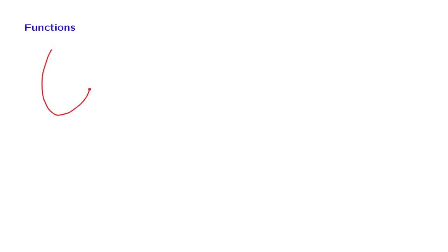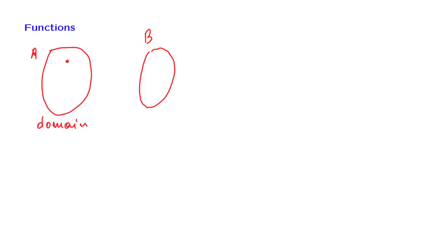To define a function, we start with two sets. One set, call it A, is the domain of the function. And we have our second set. Then a function is a rule that for any element of A, associates an element of B. We use a notation of this kind to indicate that we are dealing with a function f that maps elements of A into elements of B.